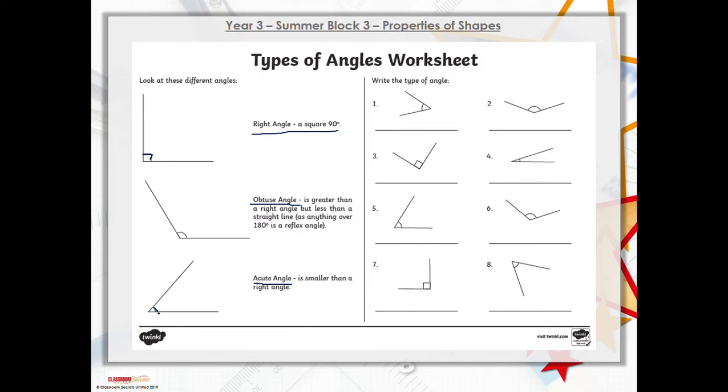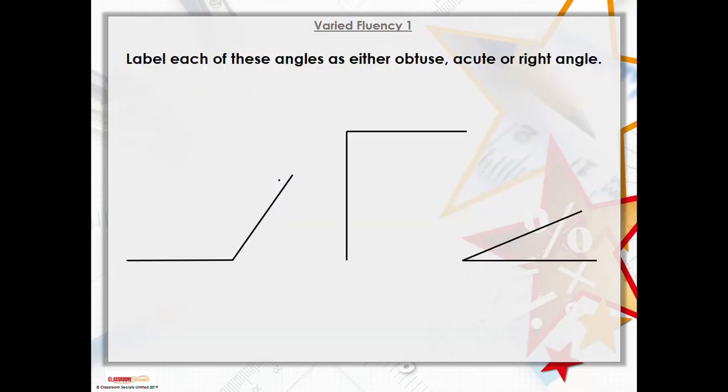You can see the angle between the lines is smaller, so give that a really good go first to identify the different types of angles. What we're going to do first is label each of these angles